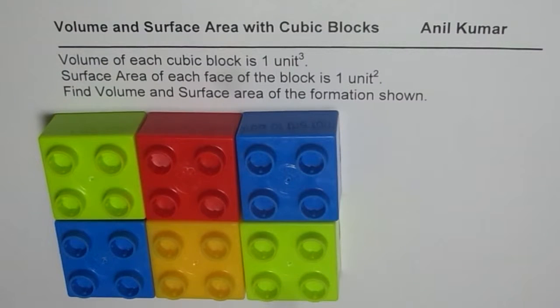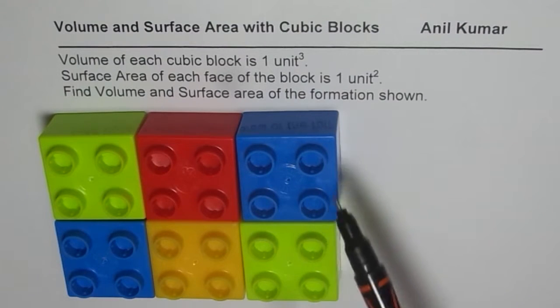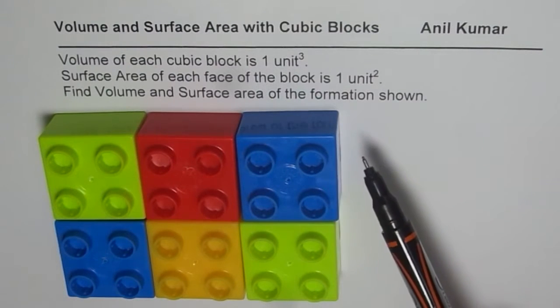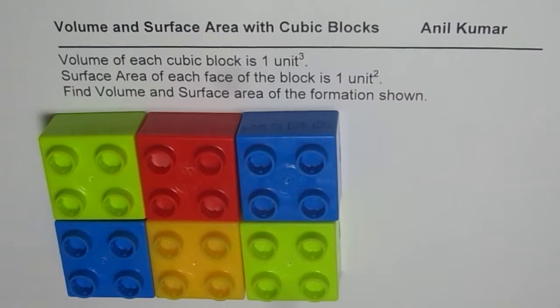Remember, volume of each cubic block is 1 unit cube and surface area of each face of the block is 1 unit square. What I mean to say is this surface, the top surface area is 1 unit square, the side surface area is also 1 unit square.